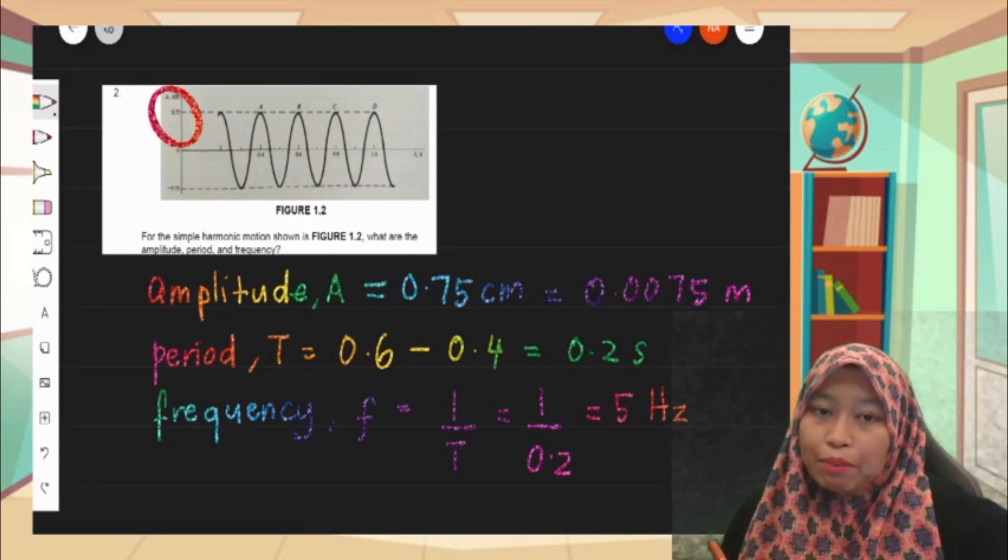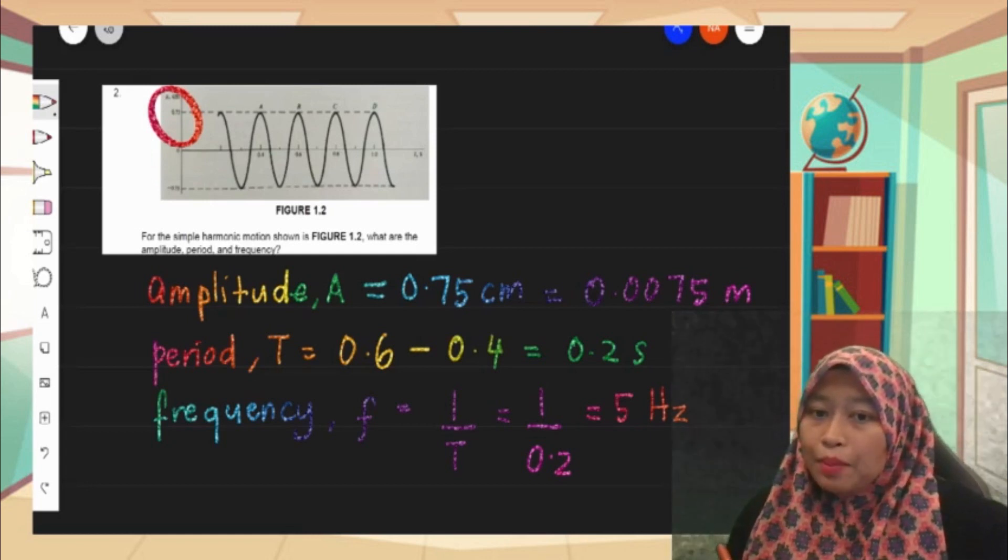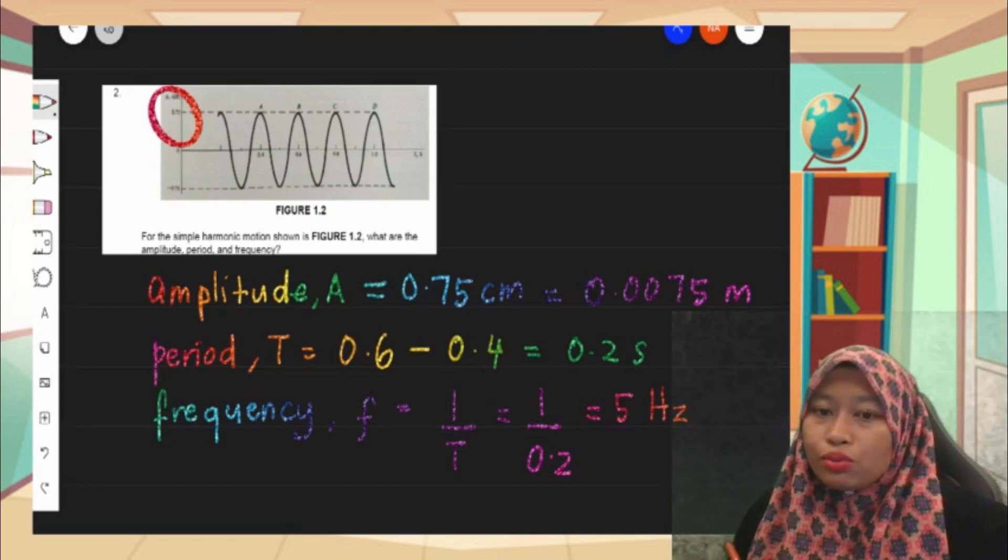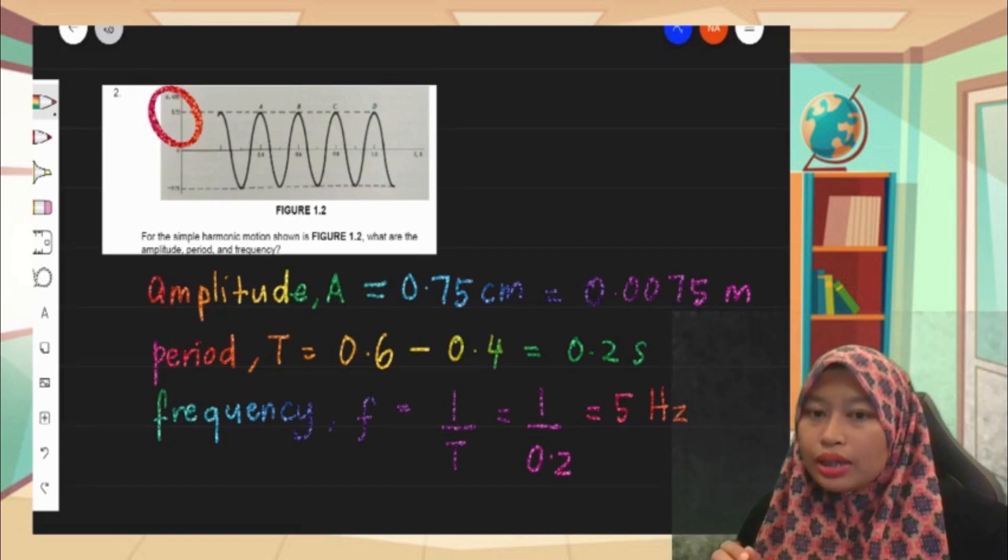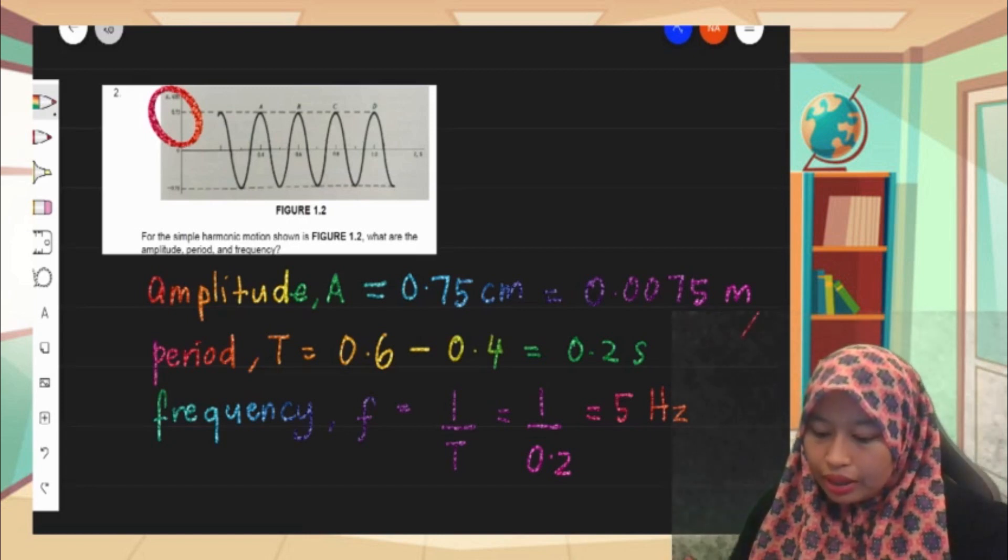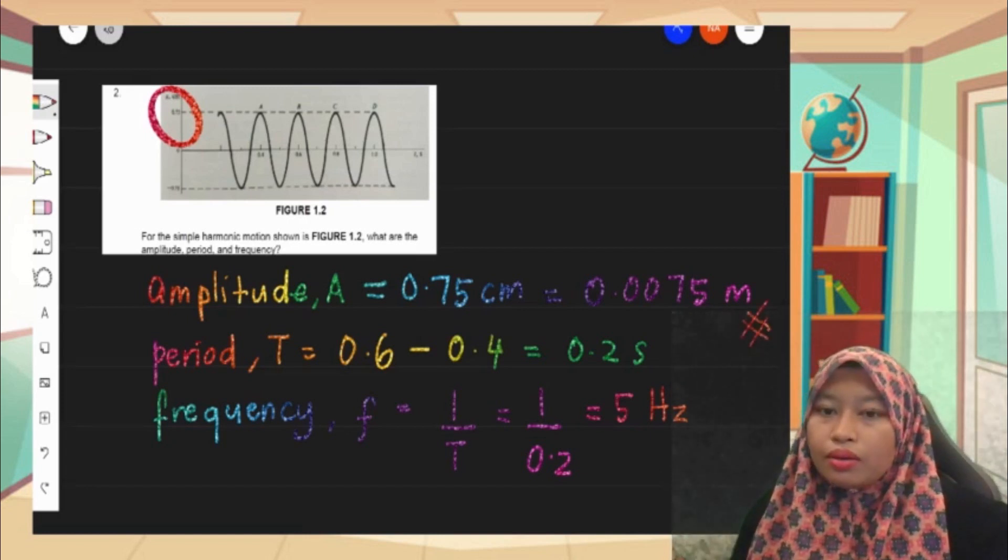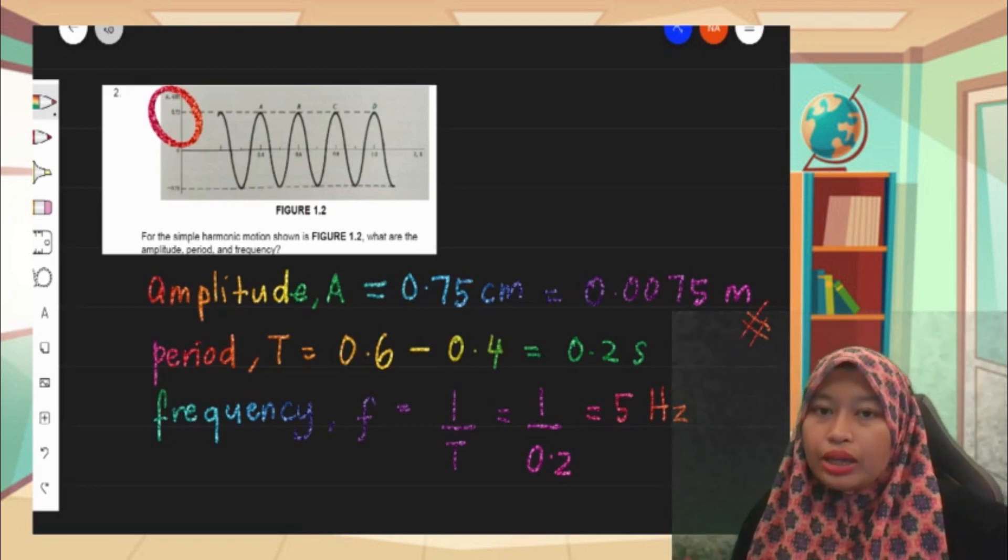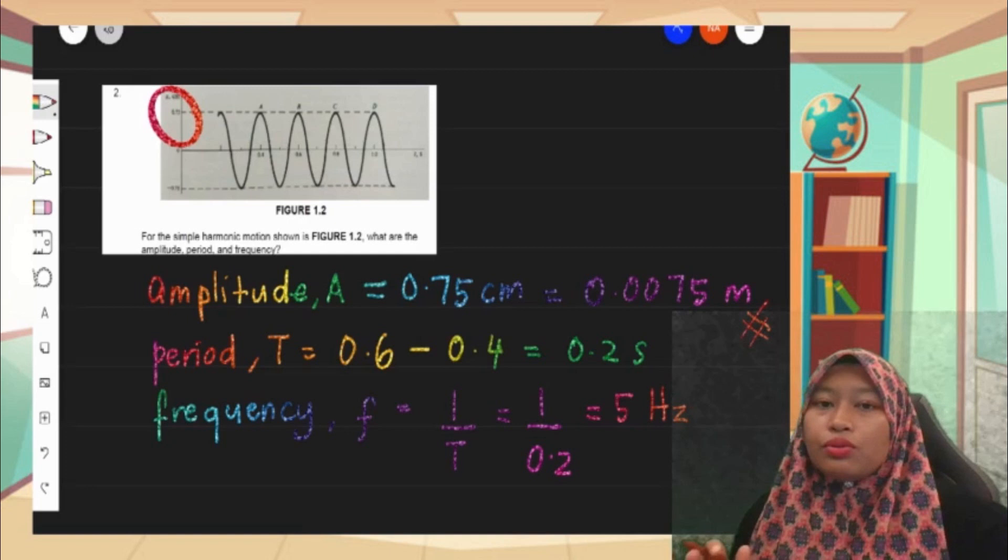But in the exam we need to convert the unit to SI, to SI unit. That's why my final answer is in meter, 0.0075 meter. Remember in the exam you need to convert the unit to SI unit.